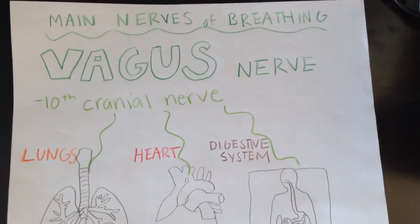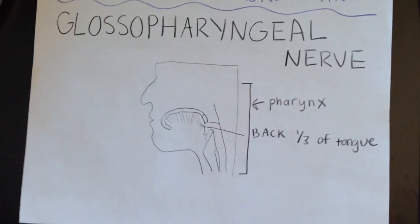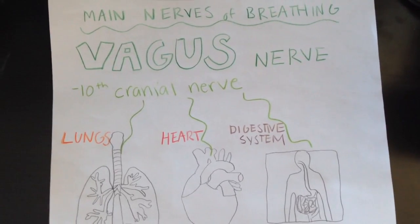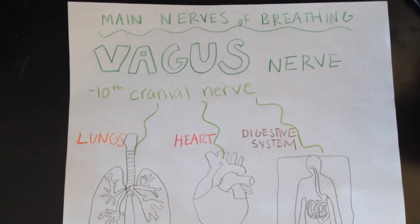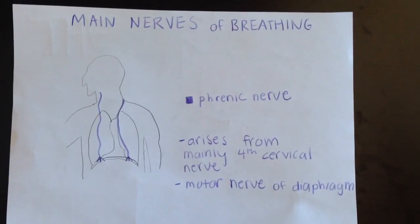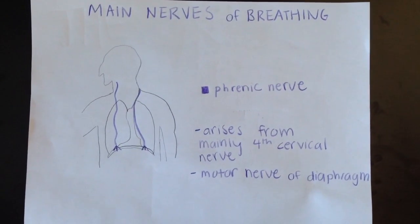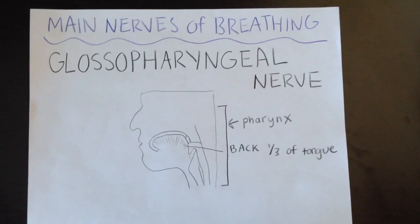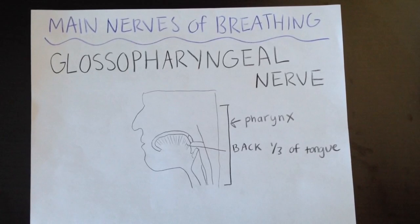The three main nerves involved in the process of breathing are the vagus nerve, the phrenic nerve, and the glossopharyngeal nerve. The vagus nerve, also known as the 10th cranial nerve, branches to multiple vital organs including the lungs, heart, and most of the digestive system. The phrenic nerve arises mainly from the fourth cervical nerve and is primarily the motor nerve of the diaphragm. The glossopharyngeal nerve supplies sensation to the pharynx and also to the back third of the tongue.